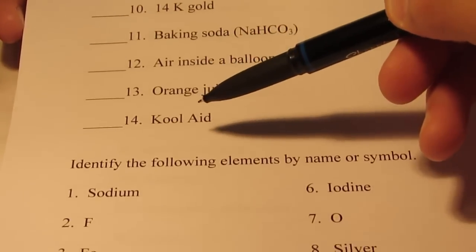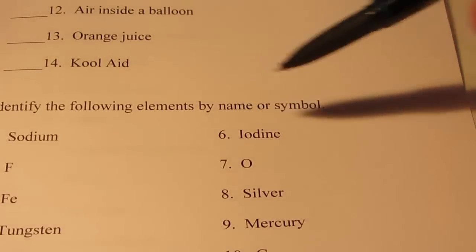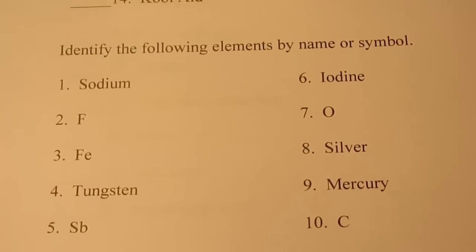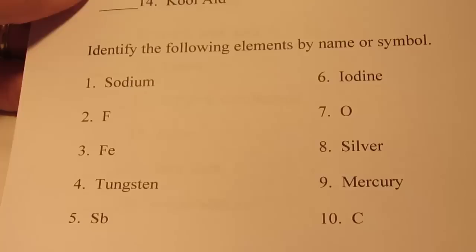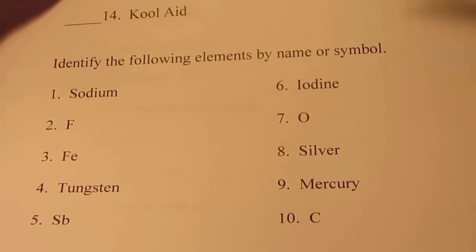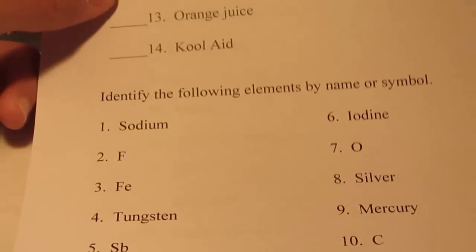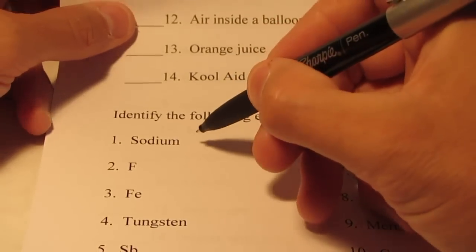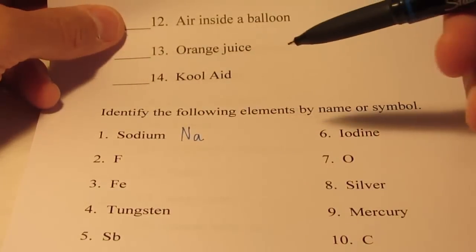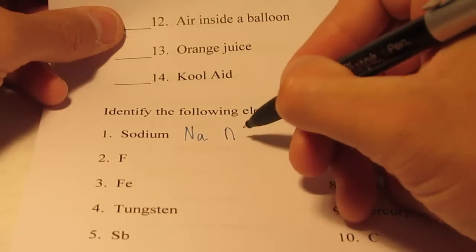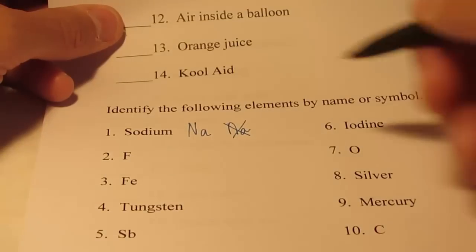The last thing I want to do is quickly identify a few elements by their name or symbol. I'll give you either the name or the symbol and you give me what's missing. There's a list of about 50 you're going to have to learn. Keep in mind, sometimes the symbol does not match the English name. Sodium is a good example — the symbol for sodium is not S. The symbol comes from the Latin name Natrium: it is Na. Notice the first letter is uppercase and the second is lowercase.